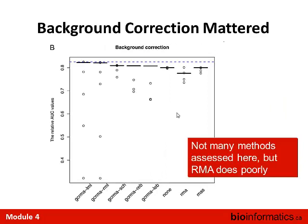The next thing they did was ask which steps of the analysis pipeline mattered. Background correction added a lot of deviation — looking at different background correction methods, there was something like 10% variation in accuracy caused by the choice of background correction. It's fascinating that RMA, the most widely used method, performed poorly in this study, and they concluded it's not a great idea to use RMA.